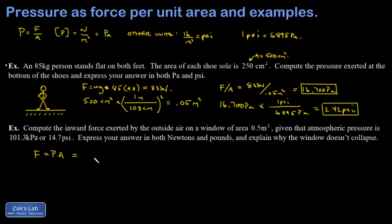I'm going to start by getting this in newtons. So I have 101.3 kilopascals. That's 101.3 times 10 to the third pascals times 0.5 square meters. And again, a pascal is a newton per square meter. So when I multiply these, I get newtons out of it. So this comes out to 50,700 newtons.